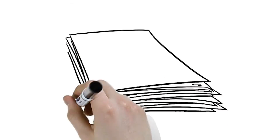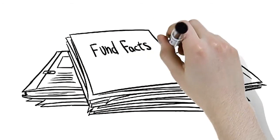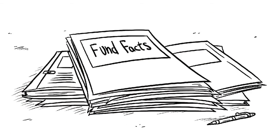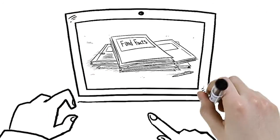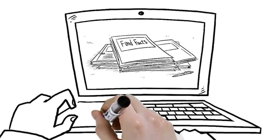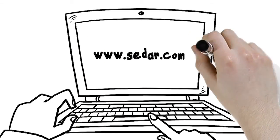Information about a fund's investment costs is available in its latest Fund Facts, Simplified Prospectus, or Management Report of Fund Performance. These important documents are available on a fund company's website or through sedar.com.